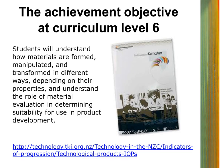91049 is derived from the technological products achievement objective from the NZC at curriculum level 6. So the starting point when understanding the requirements of 91049 is to look at what the curriculum says. What is the achievement objective at the curriculum level? What are the indicators of progression? And what other guidance is available to you?